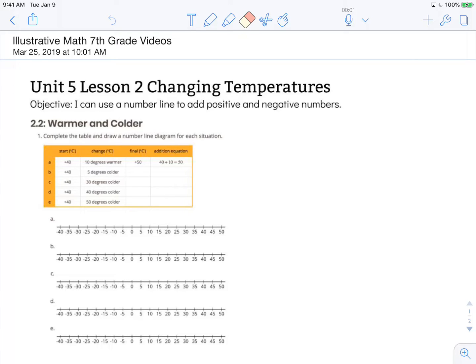The objective states I can use a number line to add positive and negative numbers. So we're going to be looking at activity 2.2, warmer and colder. The instructions say complete the table and draw a number line diagram for each situation.